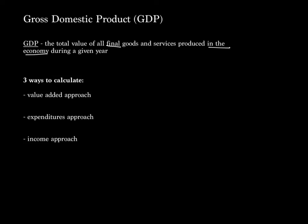We've got three ways to calculate GDP. The Value Added Approach, also known as SIGIX, which is Consumption plus Gross Investment plus Government Spending plus Net Exports, which is Exports minus Imports.